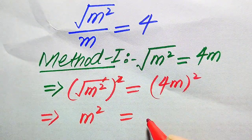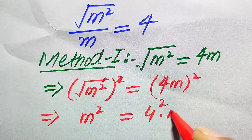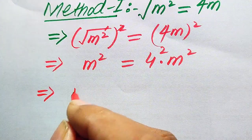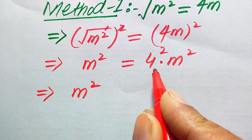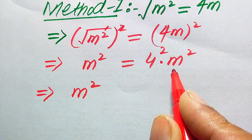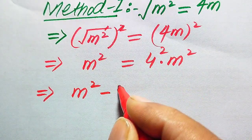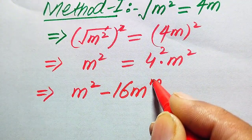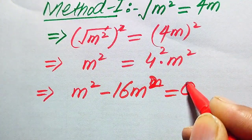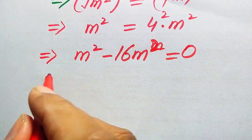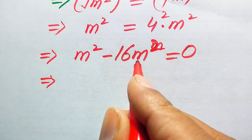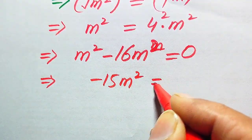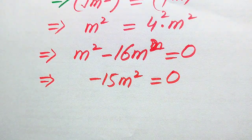We apply the square separately on both values: 4² times m² equals 16m². Now we have m² on the left and 16m² on the right. Moving 16m² to the left hand side gives us m² minus 16m² equals zero, which simplifies to minus 15m² equals zero.